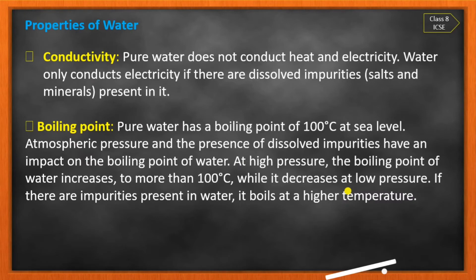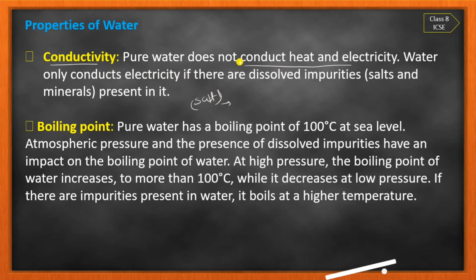Next property is conductivity. Pure water does not conduct heat and electricity — it is a bad conductor. You might think water gives us electric shocks, but the water we use at home is not pure water; it has salt dissolved in it. Salt water is a good conductor of heat and electricity. But pure water is a bad conductor of heat and electricity.